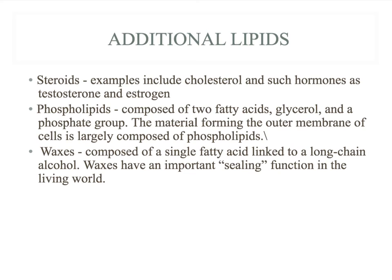You then have your phospholipids, which make up our plasma membranes — know that we'll come back to phospholipids, they're important. And then your waxes. Waxes are important — for example, plants have a waxy substance formed by lipids. It has that sealing function, and the waxy layer on plant leaves helps with the evaporation of water. Plants need to retain their water; they can't go out and get water, they have to wait for it to come to them. So if they have that waxy outside on their leaves, it helps with the retention of water.